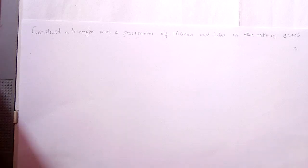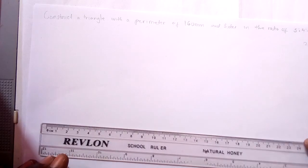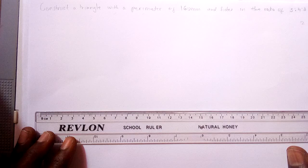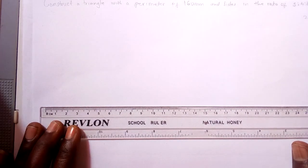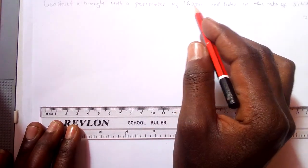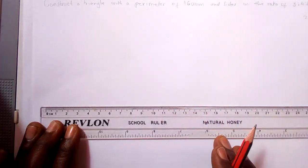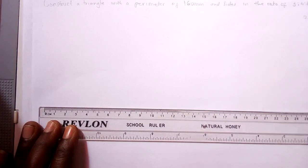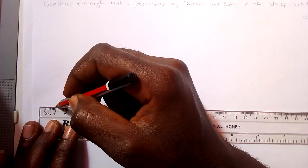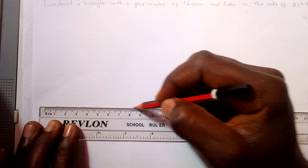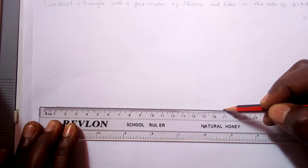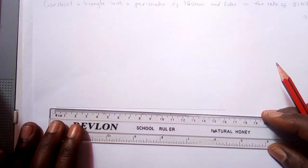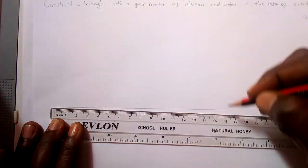Now first, when you need to do this example, you are drawing a line which has a length equal to the perimeter, which is equal to 16 centimeters. So we're drawing our 16 centimeter line. As you see, 16 centimeters.